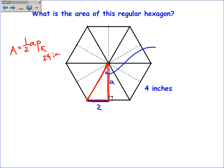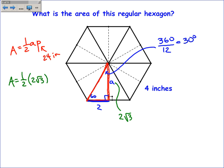The angle at the top is 360 divided by the number of those little triangles, which is always the number of sides doubled. With 6 sides, that's 12, so 360 divided by 12 is 30 degrees. Since we have 30, 90, and 60 degrees, it's a special right triangle. With the shorter leg equal to 2, the apothem is 2√3. So the area is one half times 2√3 times 24, which equals approximately 41.57 square inches.